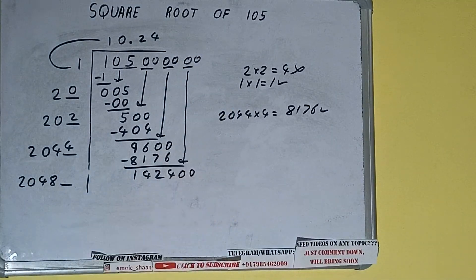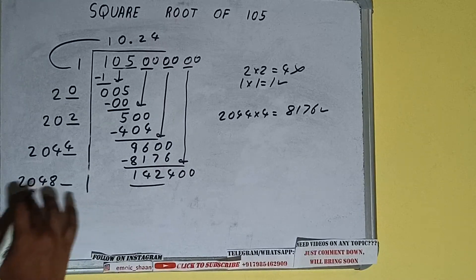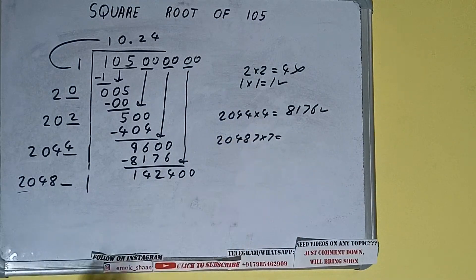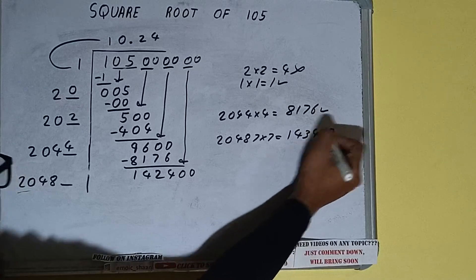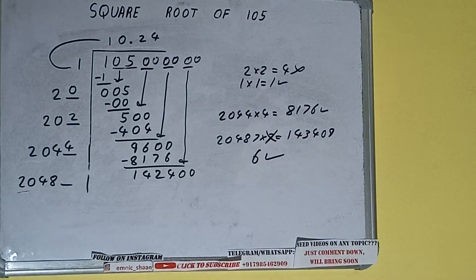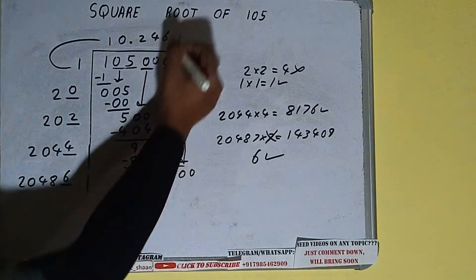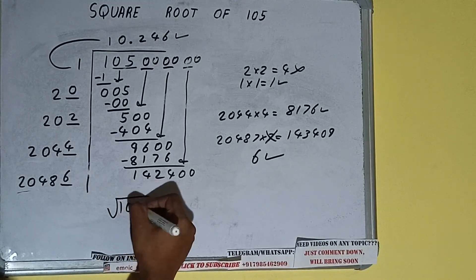And it will be 142400. Now compare this 20 with this 142. So 27 times is 140 right, so we can try for seven times. 20487 into seven we can try and we'll be getting 143409 which is slightly bigger than this number. So seven will not work but with this we can understand that six will surely work. So six here and six here but we don't need to calculate because we got the answer correct up to three decimal places. So square root of 105 will be 10.246.